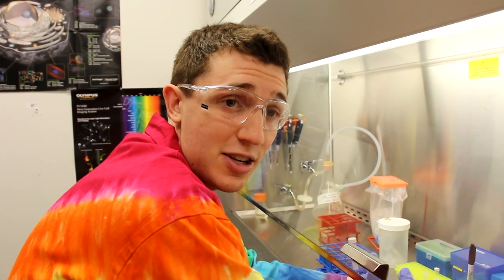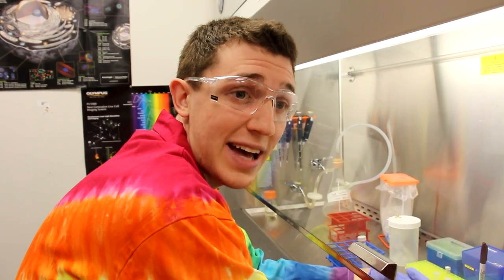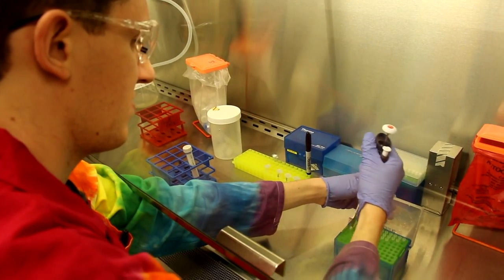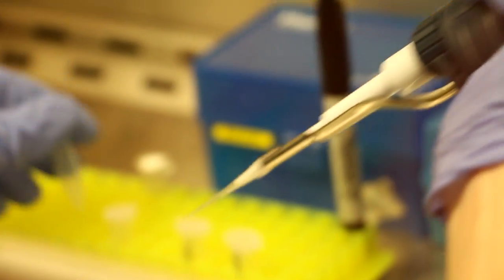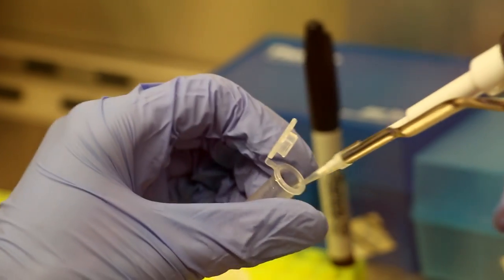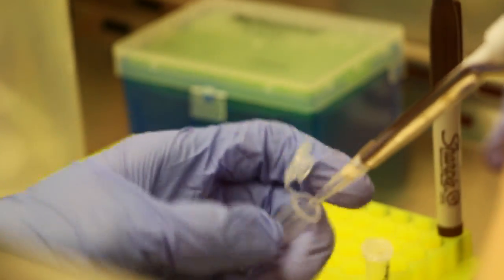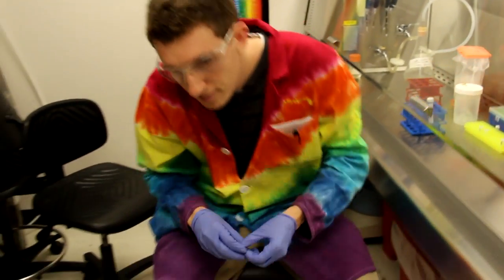First, we're going to mix Fujin reagent with DNA and then incubate it for 5 minutes before adding it to our growth media to apply to the cells. To do this, we will first add DNA to the transfection media and then Fujin reagent. Vortex briefly and then incubate for 5 minutes.